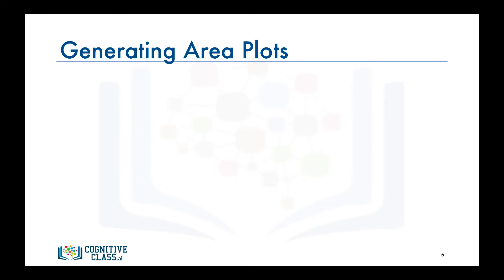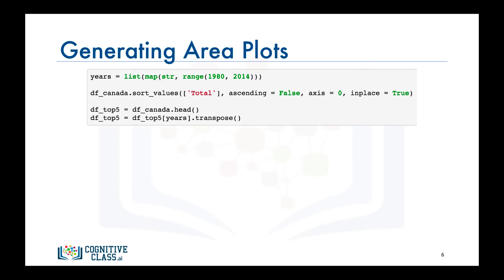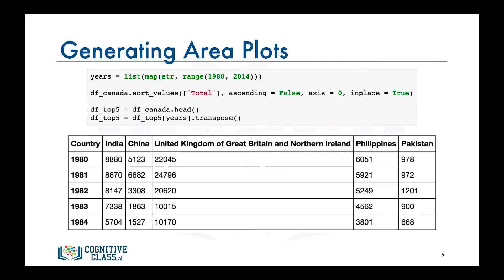After we sort our data frame in descending order of cumulative annual immigration, we create a new data frame of the top five countries and call it DF_top5. We then select only the columns representing the years 1980 to 2013 in order to exclude the total column before applying the transpose method. The resulting data frame has five columns, where each column represents one of the top five countries and the years are the indices. Now we can go ahead and call the plot function on DF_top5 to generate the area plots.